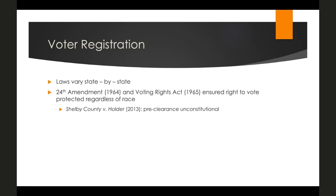The 24th Amendment, ratified in 1964, and the Voting Rights Act of 1965 ensured the right to vote was protected regardless of race. The 24th Amendment banned poll taxes, and the Voting Rights Act required the Attorney General to pre-clear any changes to election laws in states with a history of racial discrimination. However, this provision was ruled unconstitutional in Shelby County v. Holder in 2013, giving states the right to change election laws without federal oversight — leading to rollbacks of early registration, same-day voter registration, and early voting, especially in southern states.